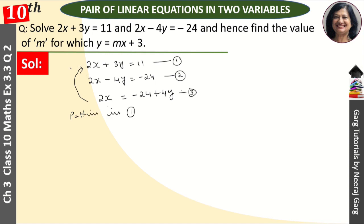Jab hamein iske andar put karenge, to yahaan is ki jagah kya aayega? 2x plus 3y is equal to 11 hai. Toh 2x ki jagah pe hamein kya dalna hai? Yeh minus 24 plus 4y. Toh minus 24 plus 4y plus 3y is equal to 11. 4y plus 3y, 7y is equal to 11. Aur yeh 24 jab idhar jayega toh yeh minus se plus ho jayega. Toh plus 24.